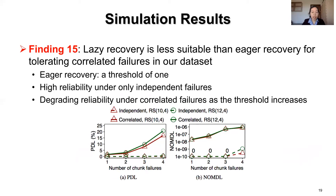We evaluate the reliability of lazy recovery under only independent failures from the mathematical failure model and under the failure patterns in our dataset. For lazy recovery, we vary the thresholds of triggering recovery from 1 to 4 failed chunks — a threshold of 1 implies eager recovery. The figure shows that erasure codes achieve high reliability under only independent failures, but reliability degrades under correlated failures as the threshold increases. Thus, lazy recovery is less suitable than eager recovery for tolerating correlated failures.